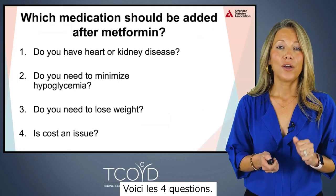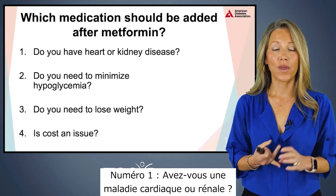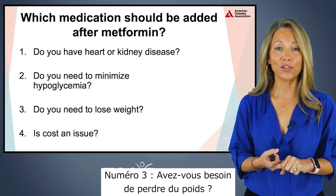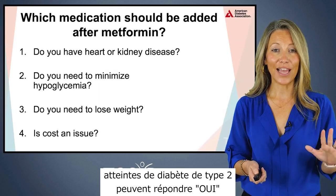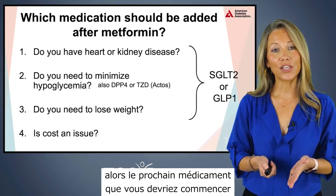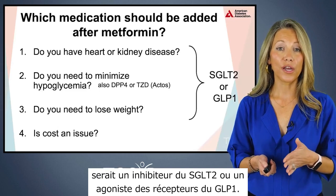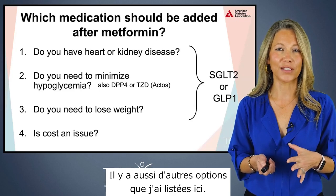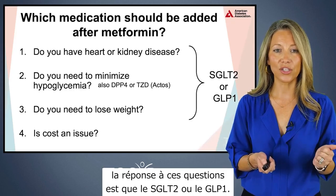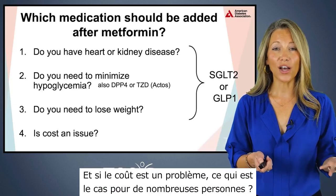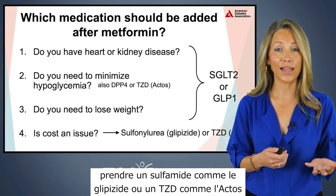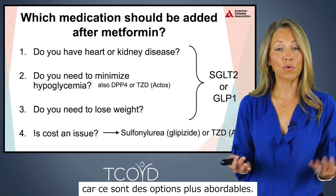Here are the four questions. Number one: do you have heart or kidney disease? Number two: do you need to minimize hypoglycemia or low blood sugars? Number three: do you need to lose weight? A lot of people with type 2 diabetes can answer yes to some or all of these. If the answer is yes to any of the first three, the next medication should be an SGLT2 inhibitor or a GLP-1 receptor agonist. The fourth question is cost — if that's an issue, you may need to start with a sulfonylurea like glipizide or a TZD like Actos, as these are more affordable options.